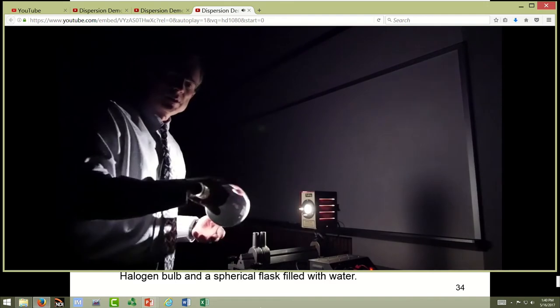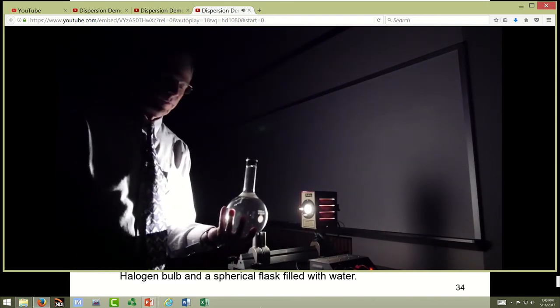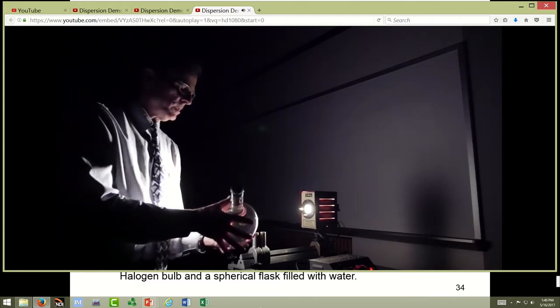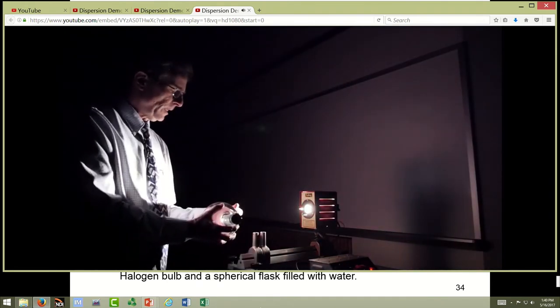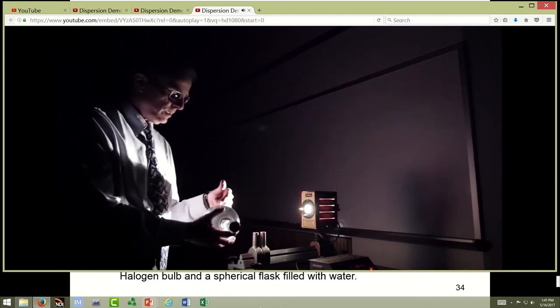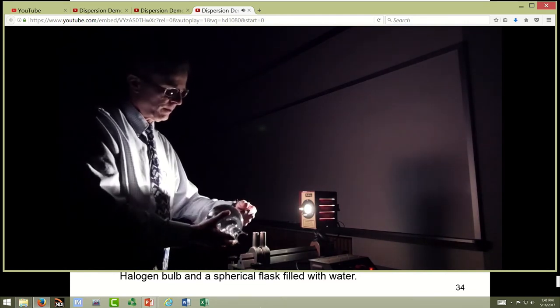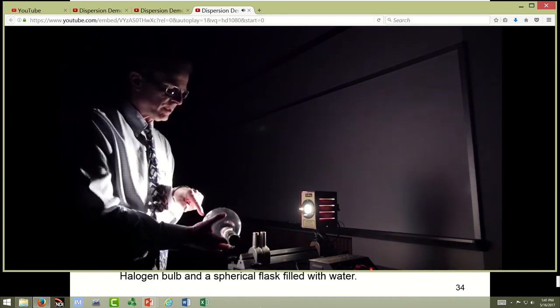The water droplets in the sky are represented by this sphere full of water. And what happens is that the sun's light rays coming from this bulb hit the drops of water, refract into the drop, so the ray of light comes into the drop of water, hits the backside.